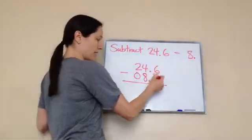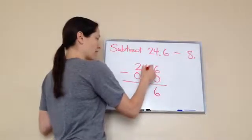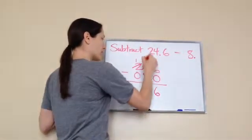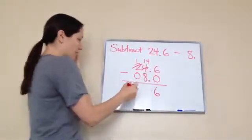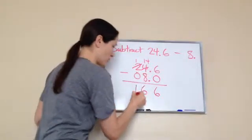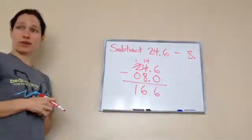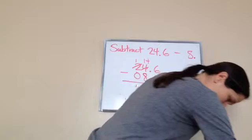If I have 6 at the top and I take away 0, I still have 6 left. I have 4 at the top. I need to borrow 1 over here. So 8, 6, and then 1. 16.6 is our answer. Got it? Yes.